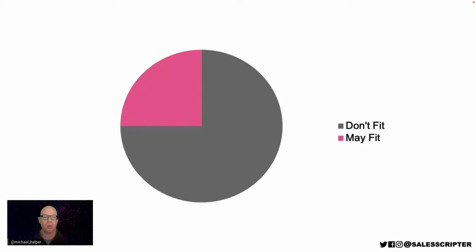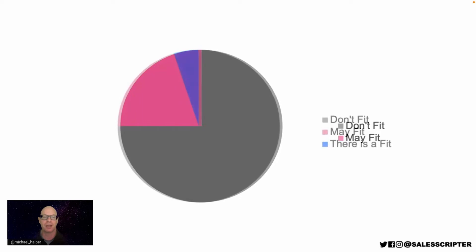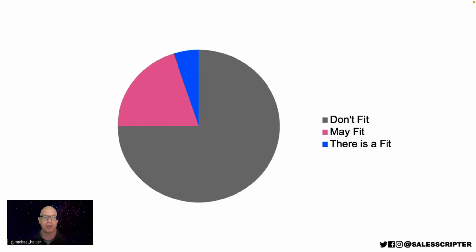When you're talking to prospects, you want to figure out where they fit in the pie. Are they in the larger piece where prospects don't fit, or are they in the smaller piece where there is potential for a fit? When you identify there might be a fit, you can divide that piece further to say that some of those prospects may have a fit and some definitely have a fit.